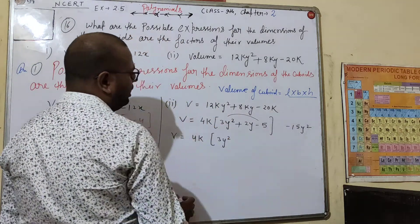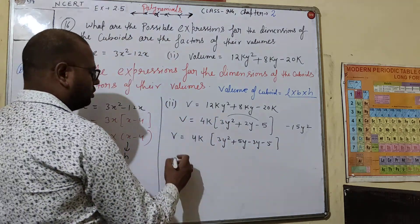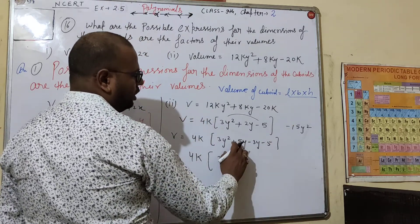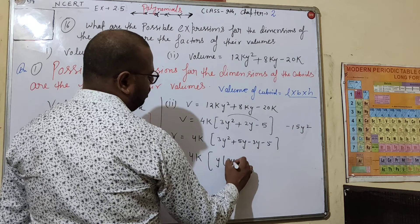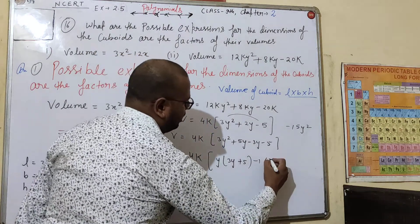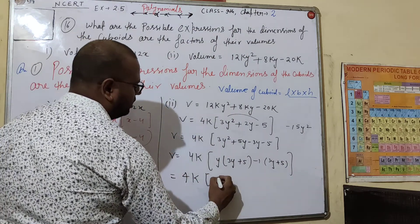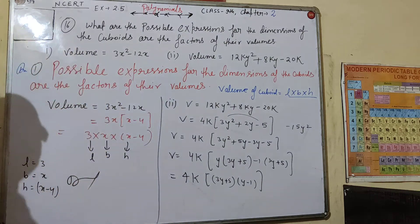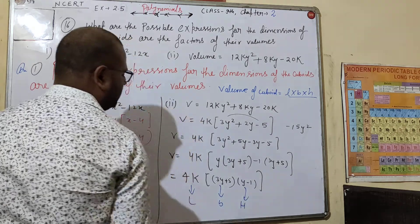Now we factor 3y² minus 2y. If we do 5 plus 3 into y, we split as 5y and minus 3y, giving the same result. So we have 5 times 3 equals 15 minus y squared. With common term y in first group giving y times 3y plus 5, and common term in second group. So here we have 4k times 3y plus 5 times y minus 1 as the final factored form.